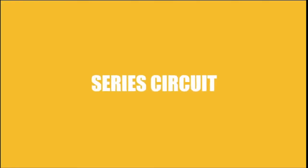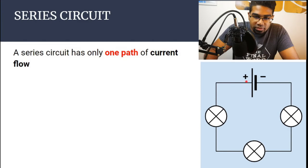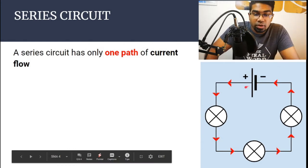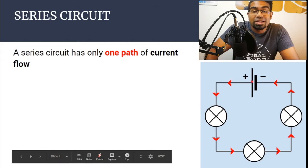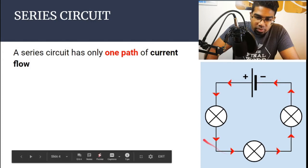Before we go into the comparison, let's do a quick review on what a series circuit is. A series circuit has only one path of current flow. Current flows from the positive terminal to the negative terminal. Remember, current is a flow of charge, and when we are talking about an electrical circuit like this, the charge that is flowing is electrons.